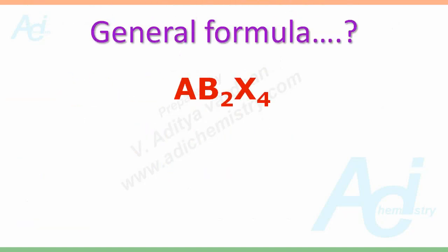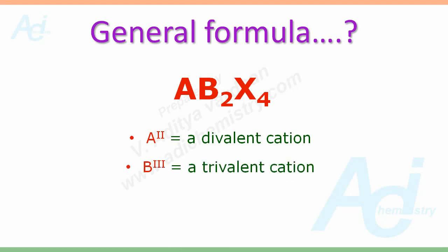Let us now recall the general formula of a spinel. It is AB2X4, where A is a divalent cation, B is a trivalent cation, and X may be oxygen, sulphur, selenium, etc. In this presentation, I am going to explain five simple rules which I have formulated to determine whether a spinel is a normal one or an inverse one.